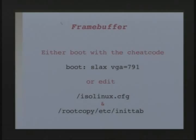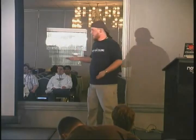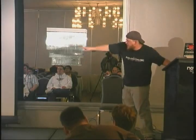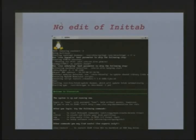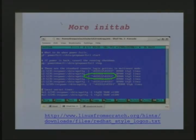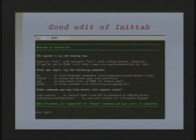Frame buffer: Slax does not use it by default. You have to enable it. You can type in a cheat code or edit two files. Without it, when you boot Slax it looks really old and not high tech. When you enable the frame buffer, you have a lot more space on your screen because your text is smaller — it looks more modern. If you're doing a command line distro like Slasterisk, you're going to want that extra room. Add the value in isolinux.config and you'll have your frame buffer. If you edit your inittab file with the right setting, when it boots it clears the screen and positions things nicely, which makes it look really nice.